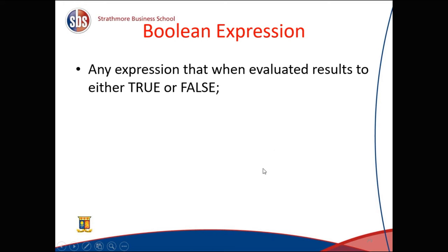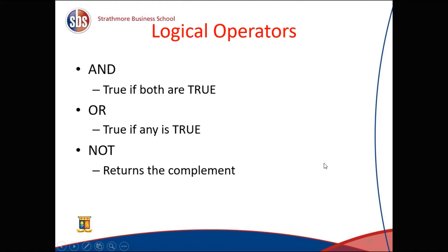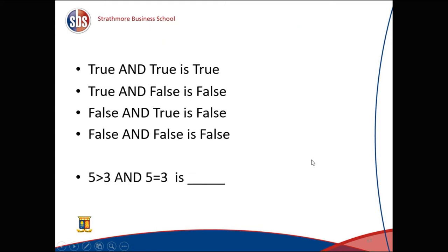To use WHERE, we need to understand Boolean expressions — expressions that evaluate to either true or false. We use relational operators: equal to, greater than, less than, greater than or equal to, less than or equal to, and not equal to. Logical operators include AND — true only if both are true — OR — true if any is true — and NOT, which returns the complement.